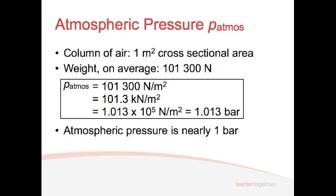And it's one metre squared in area. So we've got one metre squared of air, column of air, and its weight, on average, has been determined to be around 101,300 newtons.